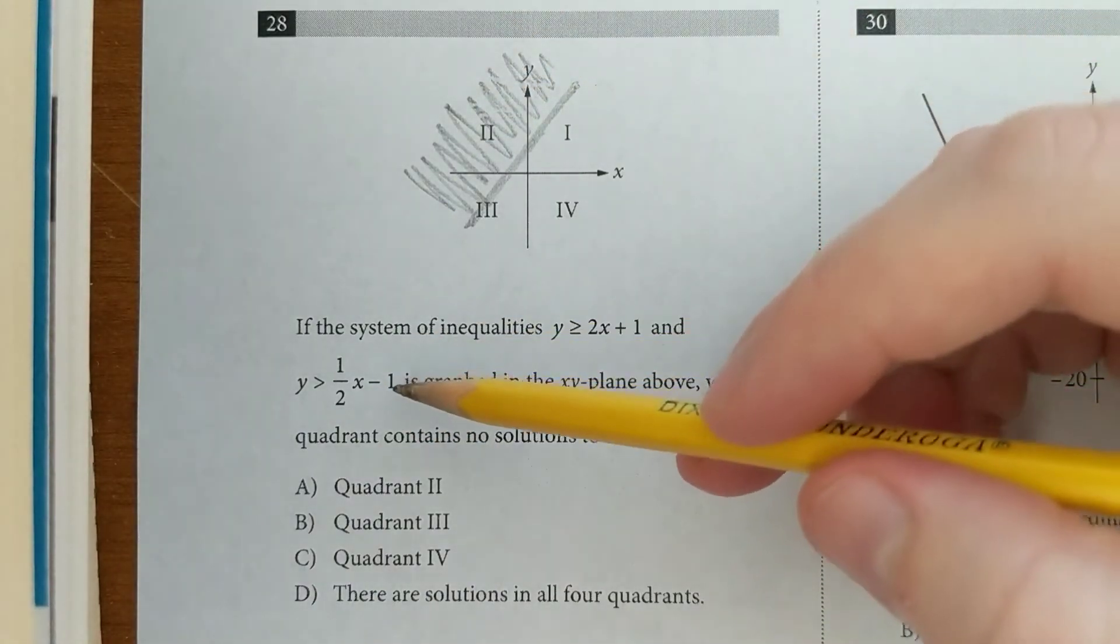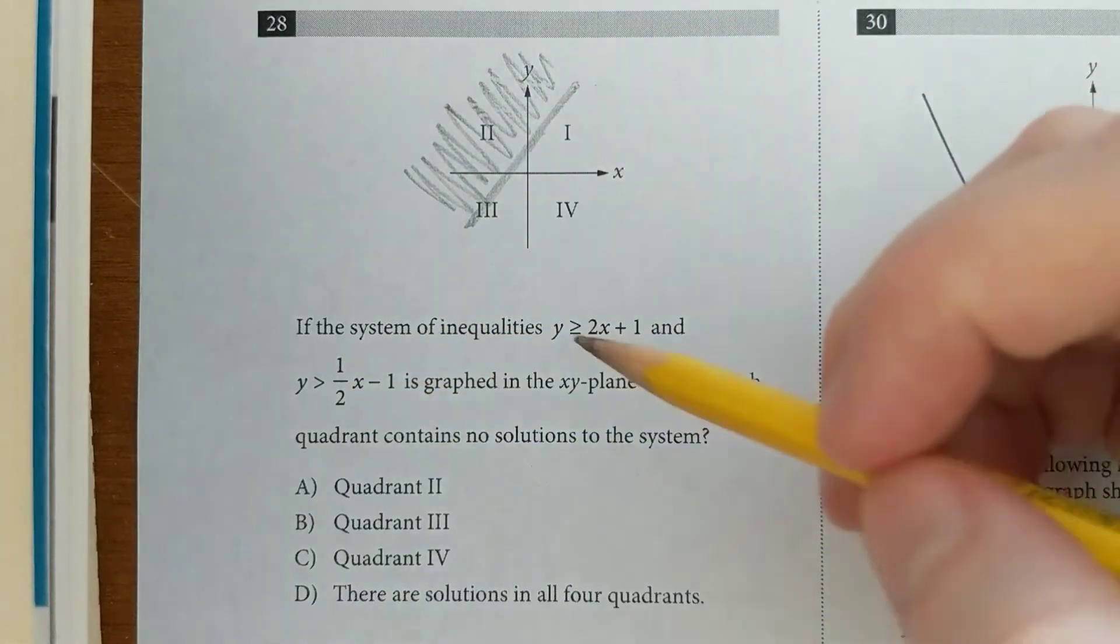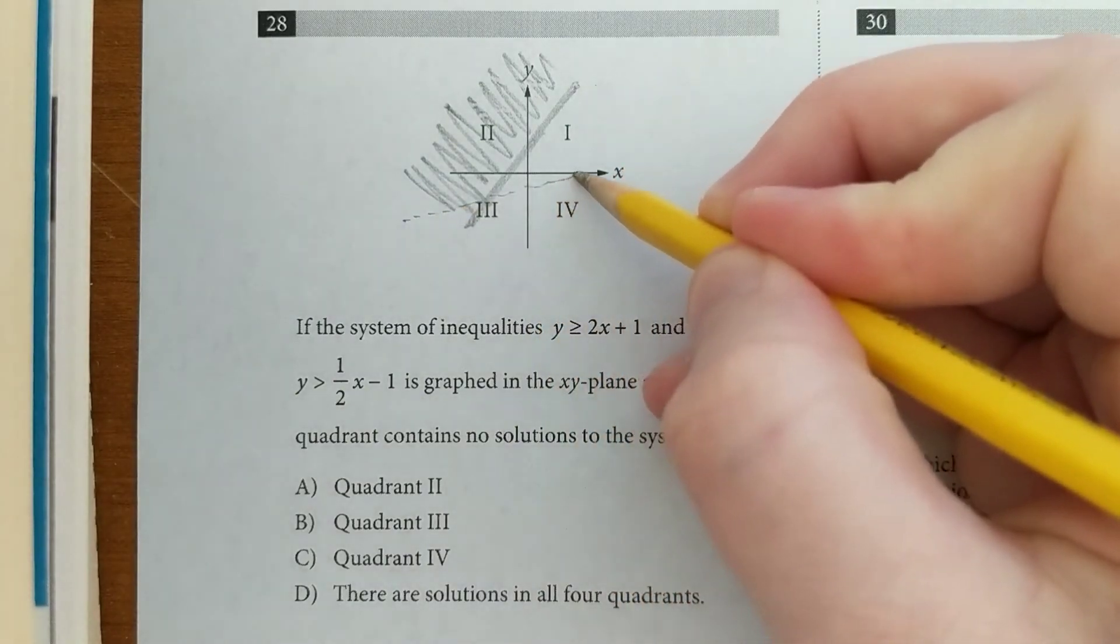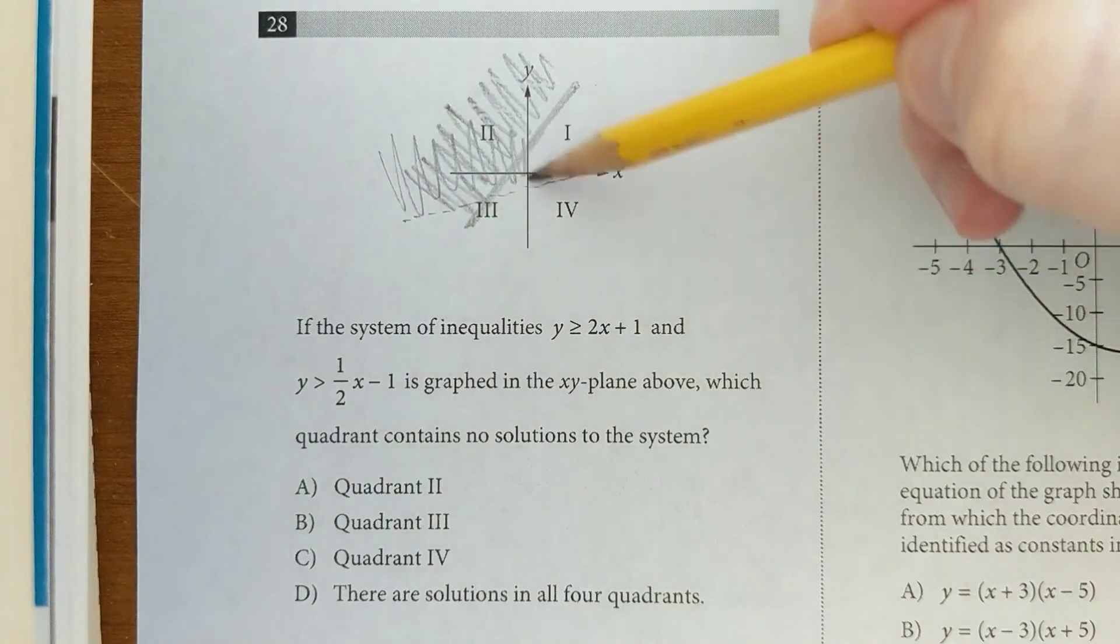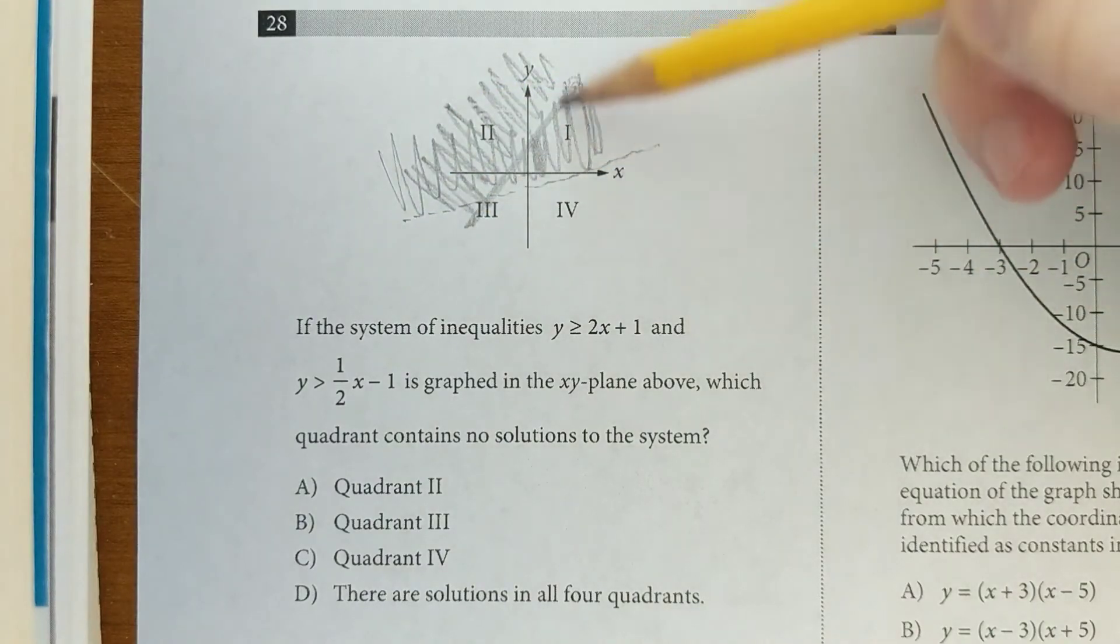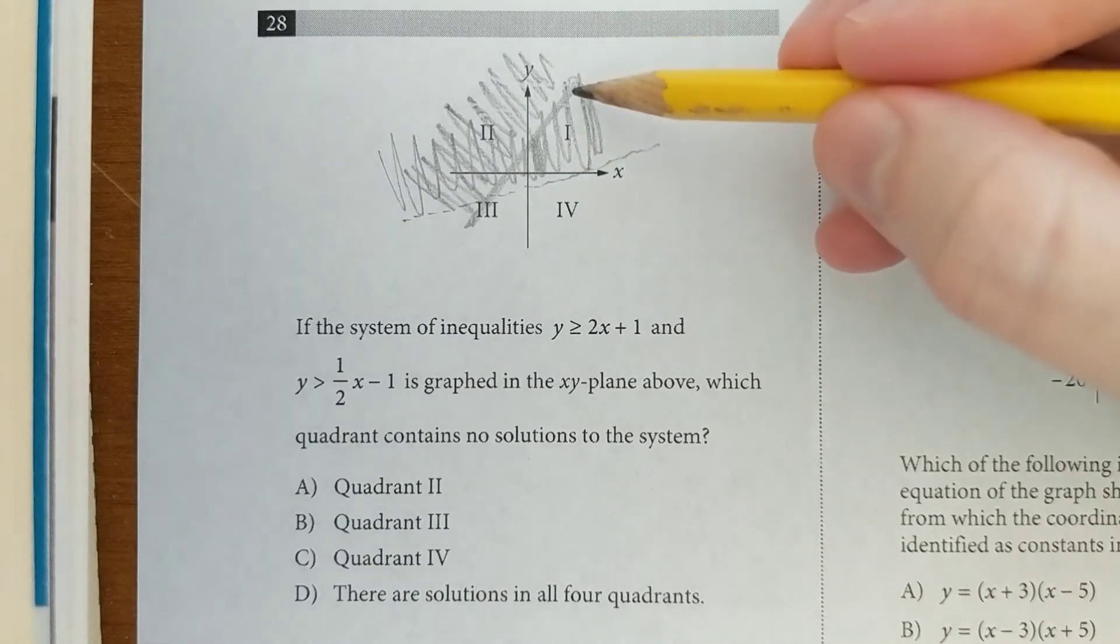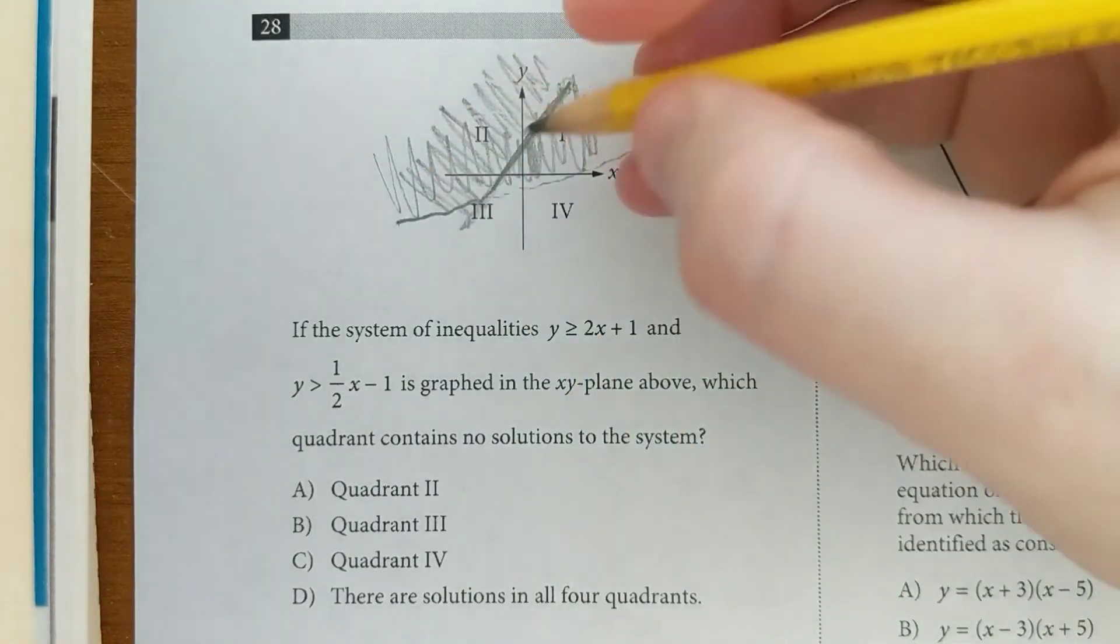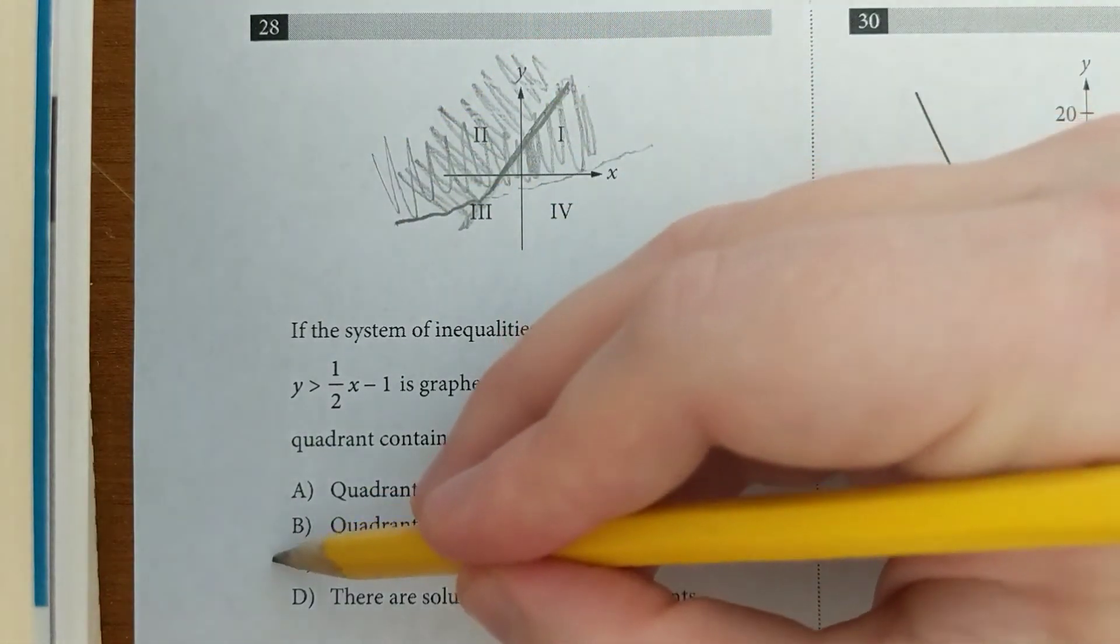This next one also has a positive slope, but it's a little bit more gradual. And it hits at negative 1. We have to make this one dotted because it's only greater than, not greater than or equal to. But this one is going to hit all four quadrants. Now, the thing is, in order for it to be a solution, it's got to work for both. That means that we're interested in this area right here. And that area does not include quadrant four, so the answer is C.